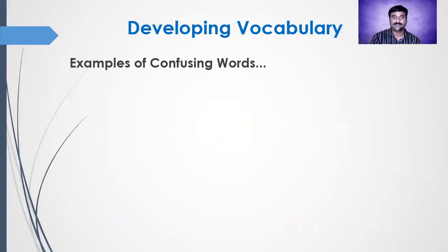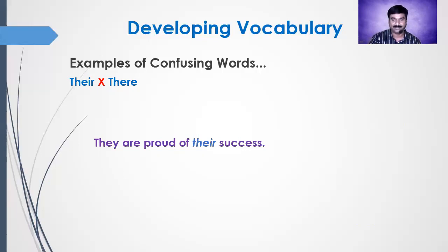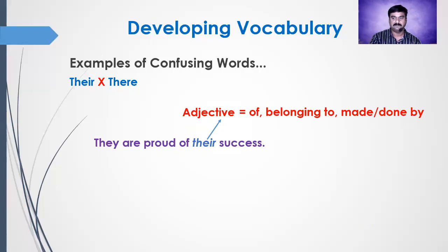Let us have another example. The next pair is T-H-E-I-R 'their' and T-H-E-R-E 'there'. Friends, these two words are always confused by listeners. Context is very important. Look at the sentence: 'They are proud of their success.' Here, success is an idea — it is invisible; you can experience it but you cannot touch it. So it is T-H-E-I-R 'their' success. Here, 'their' is an adjective meaning 'of or belonging to, made or done by' — the success belongs to them.